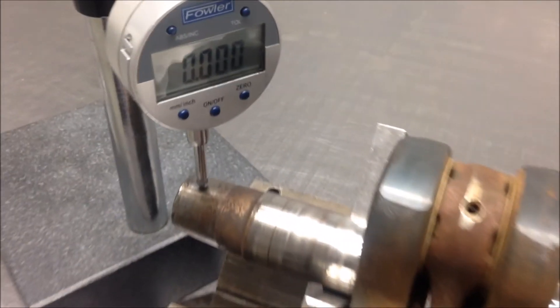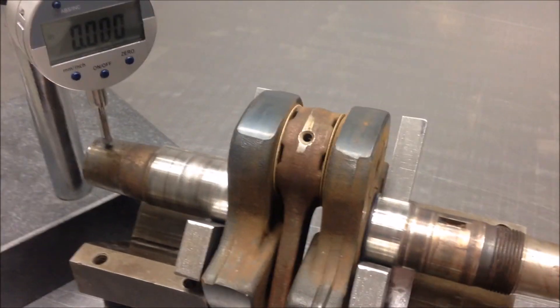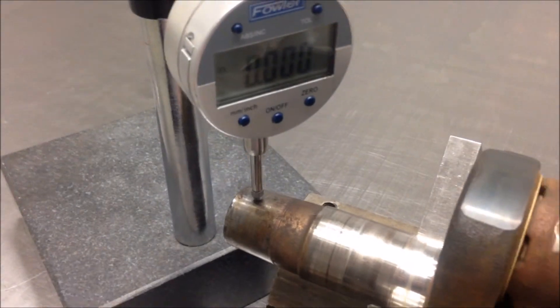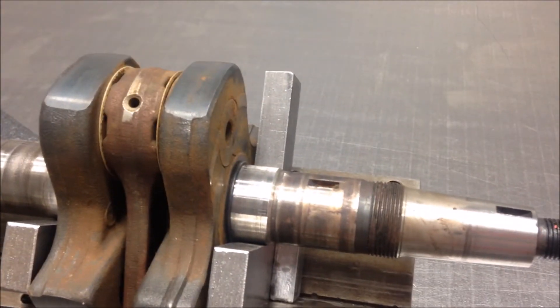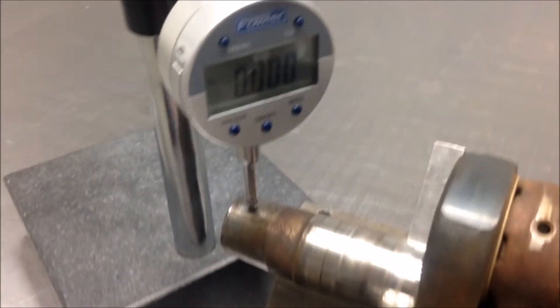So next, using the dial indicator, we'll check run-out this end of the crankshaft. All you want to do is simply set your dial indicator properly, zero it out, and then begin rotating the crankshaft.